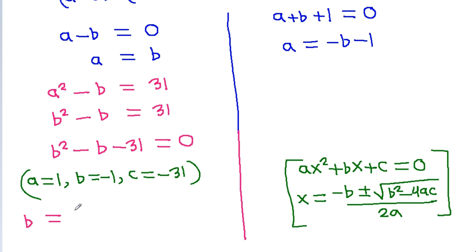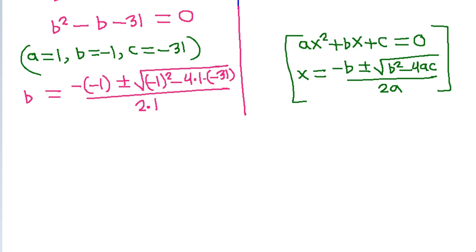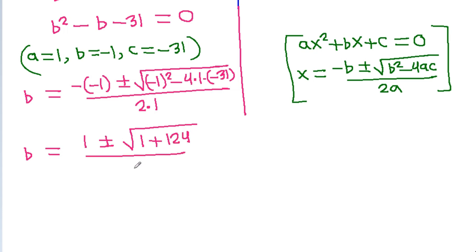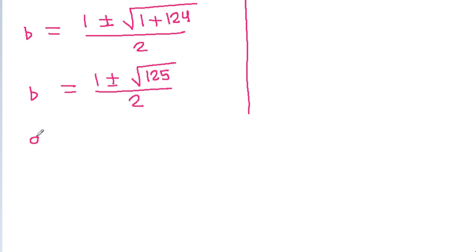So b equals minus of minus 1 plus or minus square root of (minus 1) squared minus 4 times 1 times minus 31, divided by 2 times 1. This gives b equals 1 plus or minus square root of 1 plus 124 divided by 2, so b equals 1 plus or minus square root of 125 divided by 2. Since a equals b, a also equals 1 plus or minus square root of 125 divided by 2.